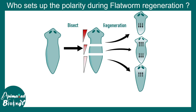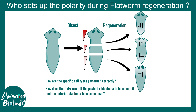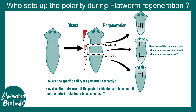We return to the unanswered question: who dictates the precision of regeneration? We hypothesized some gradient exists, but we don't know which molecule creates it or how it is interpreted. Specifically: how are cell types patterned correctly, and how does the flatworm tell the posterior blastema to become a tail and the anterior blastema to become a head? How does the middle segment know where to make the head and where to make the tail?